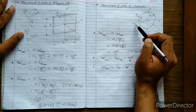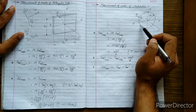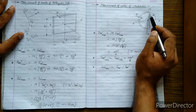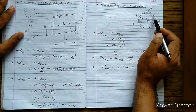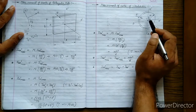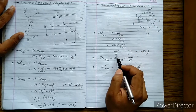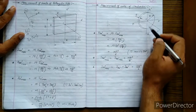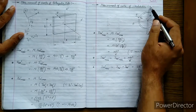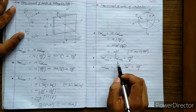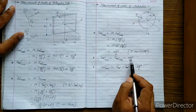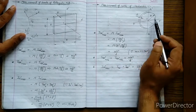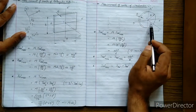Now let us find the mass moment of inertia of the circular disc about the second axis, BB'. It will be exactly the same, because this is a circular face — if you draw any axis in the plane at any angle, the mass moment of inertia will still remain the same. So about both axes AA' and BB', it is equal to Mr²/4.